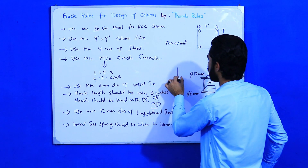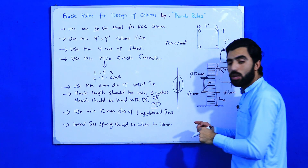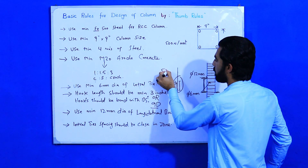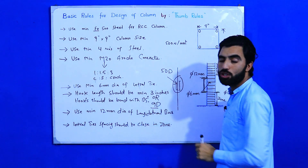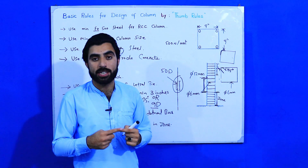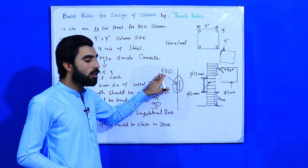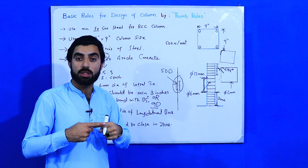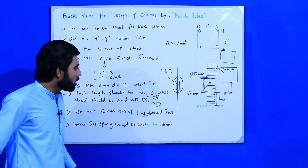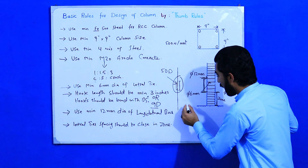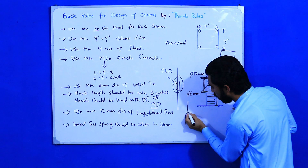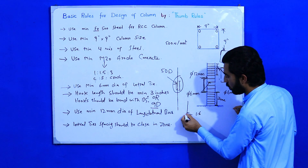For the overlapping length of longitudinal bars, the lapping should be 50d, where d is the diameter of the longitudinal steel bar. You can overlap one steel bar with another to a length of 50d. Also, when lapping, you will bend the bar at the lapping point with a slope of 1:6.